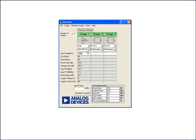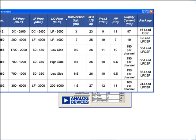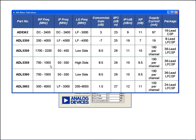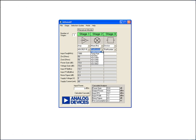As I add a second stage — say a mixer — I can again go to the selection guide, go to mixers, and choose one of the many mixers. In my case, I would use the ADL5802, which is a broadband mixer, at 1900 MHz. Once I hit enter, my cascaded analysis at the bottom gets updated with stages one and two.